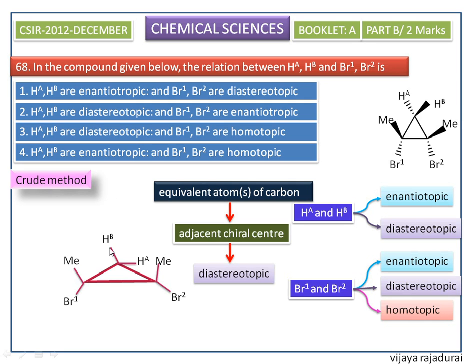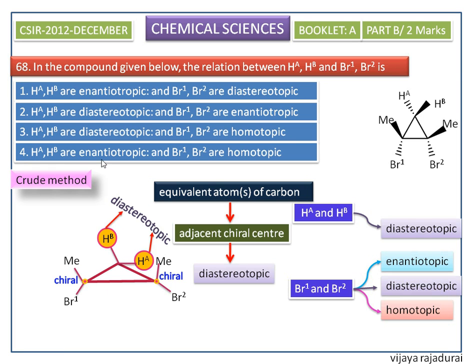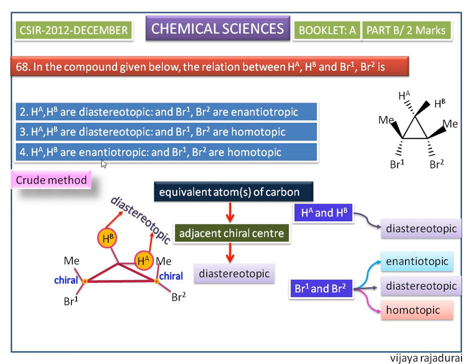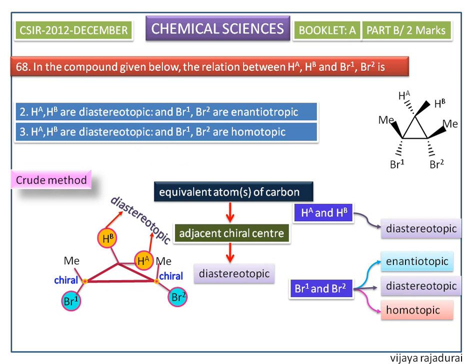We consider HA and HB. These two equivalent atoms on this carbon have two adjacent chiral carbon centers. So, HA and HB are diastereotopic. In the first and fourth options, HA and HB are given as enantiotopic, so we remove the first and fourth options.